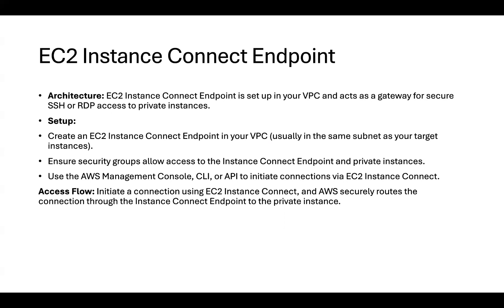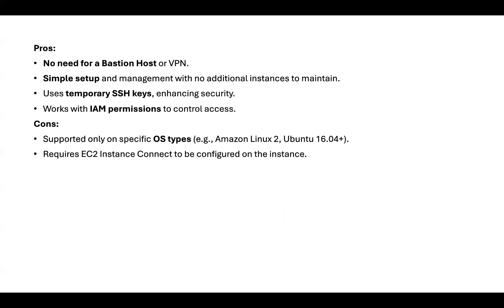With EC2 Instance Connect Endpoint, we don't need a bastion host or VPN. It's a very simple setup with no additional instance to maintain, no patching, and no extra security configurations to implement. It uses temporary SSH keys which enhances security, and it works with IAM permissions to control access.